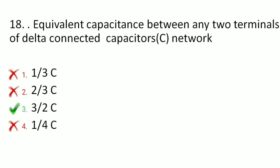Next is: what is the equivalent capacitance between any two terminals of a delta-connected capacitor network? The options are (1/3)C, (2/3)C, (3/2)C, or (1/4)C. The correct option is (3/2)C. The equivalent capacitance between any two terminals of a delta-connected capacitor network is (3/2) of each capacitance.